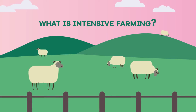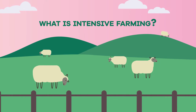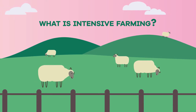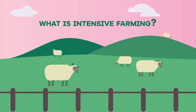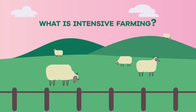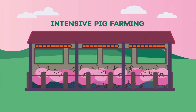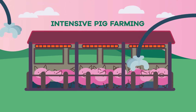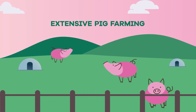What is intensive farming? It's the use of modern farming practices that have radically increased the efficiency of farming in order to produce more food from the available land. In other words, in intensive pig farming, the animals are confined to tiny cages where they can hardly move, but in extensive farming they can roam freely.